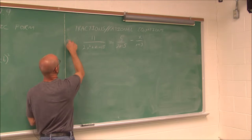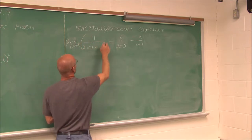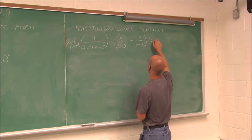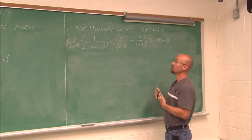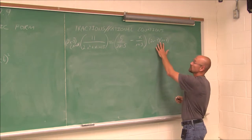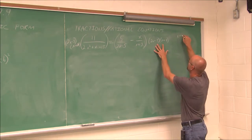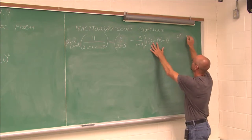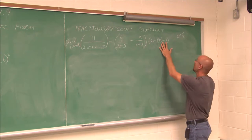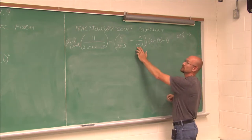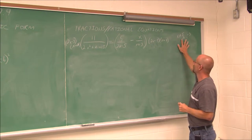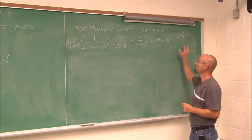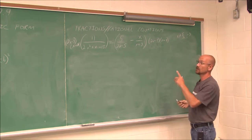Before I multiply through by the LCD, I'm going to determine the domain — any restrictions I'm not allowed to get as answers. Since we have x's in the denominators, dividing by 0 makes it undefined. Setting each factor to 0: x cannot equal 5/2, and x cannot equal negative 3, because negative 3 plus 3 is 0, which is a restriction. If any answer matches one of those, I have to exclude it.